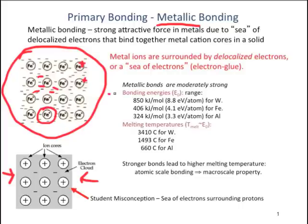Here we have some bonding energies and some melting temperatures for some given metals. Notice that there is a direct correlation between the bonding energies and the melting temperatures: the higher the bonding energy, or bond strength, the higher the melting temperature, as shown by the three given metals.